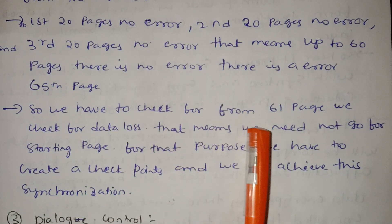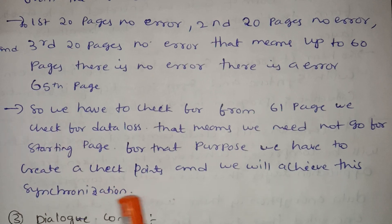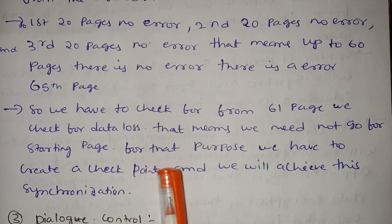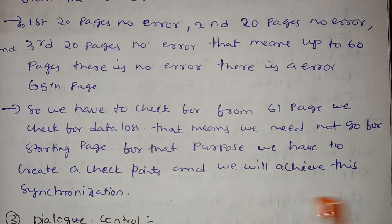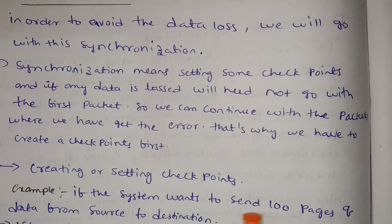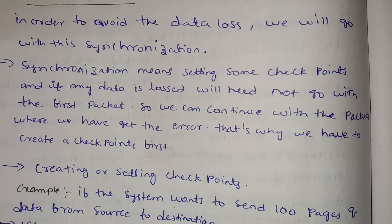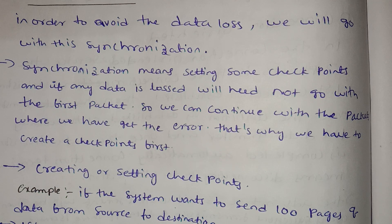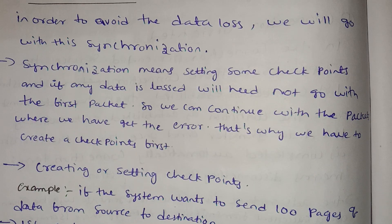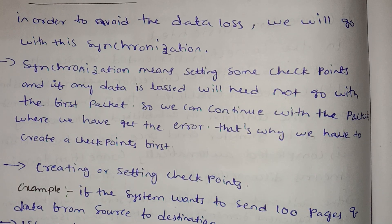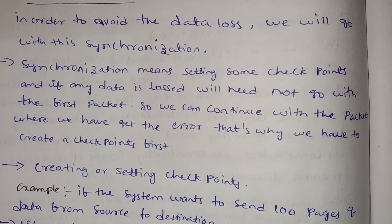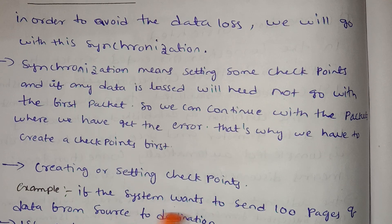So we have to check from page 61 for data loss. We need not go back to the starting page. For that purpose, we have to create a checkpoint. We will achieve synchronization this way. If any data is lost, we need not go to the first packet — we continue from the packet where we have the error.